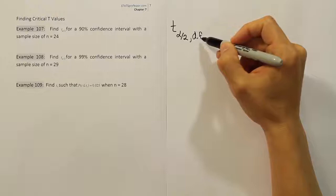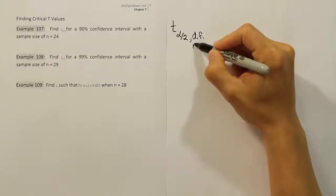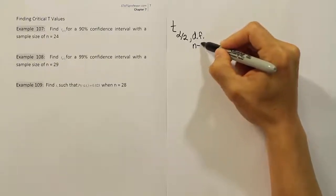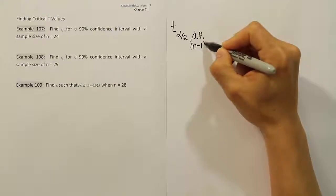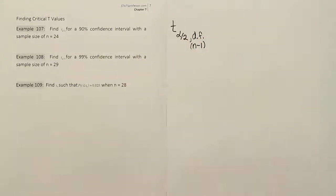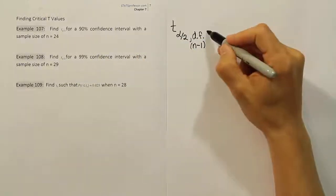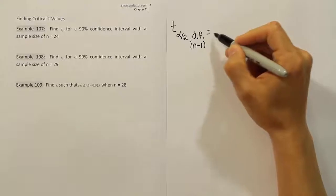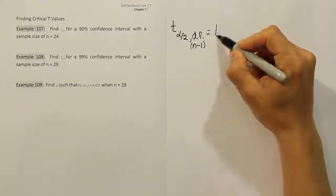Degrees of freedom is simply n minus 1 — just take 1 away from n. So for example 107, the t value we're looking for will use that formula.